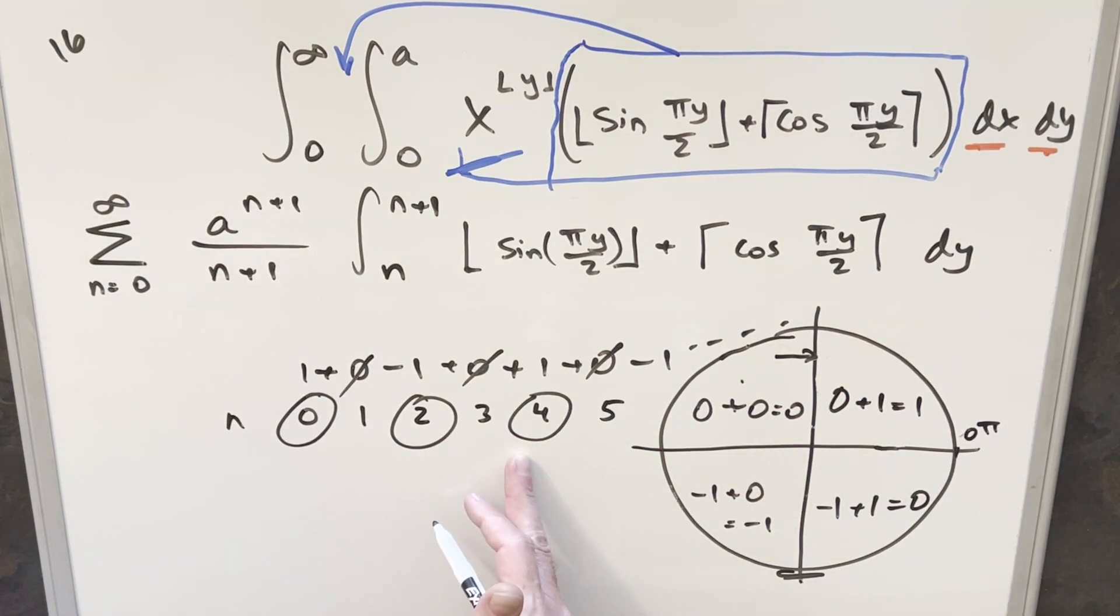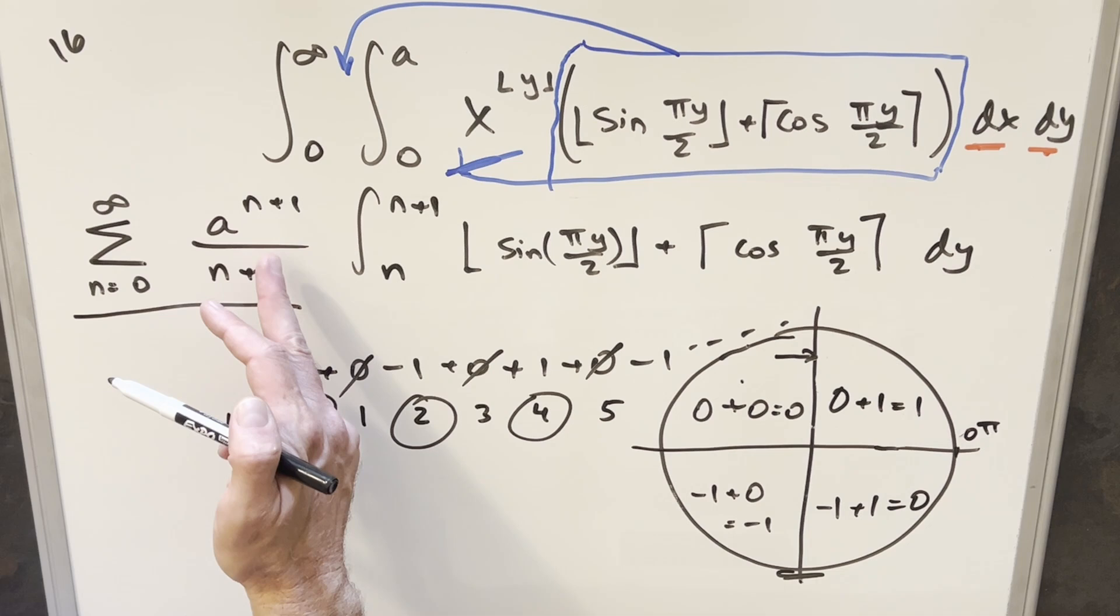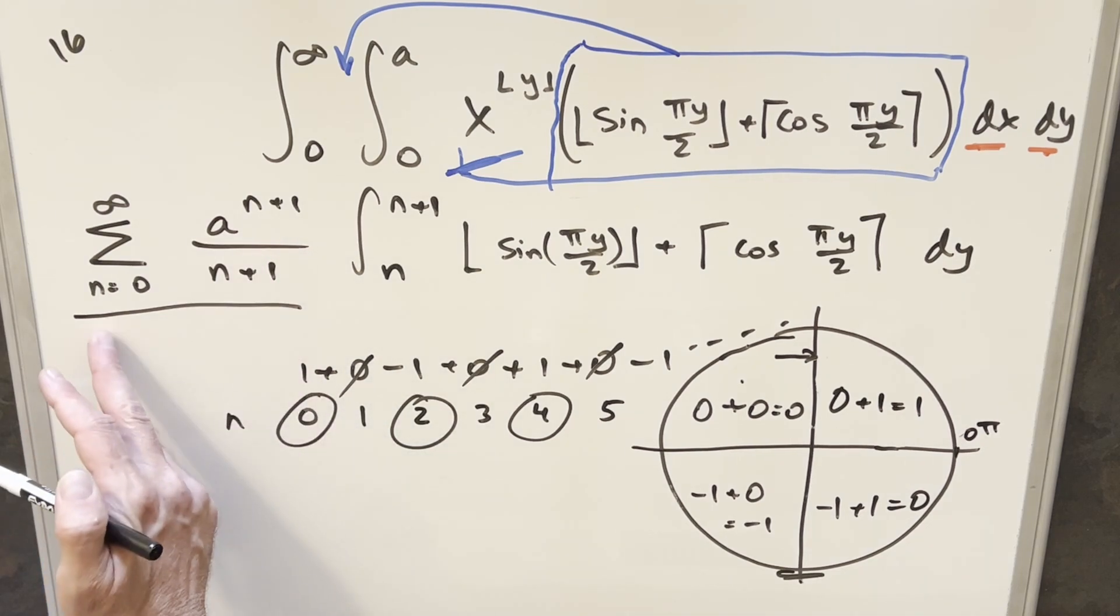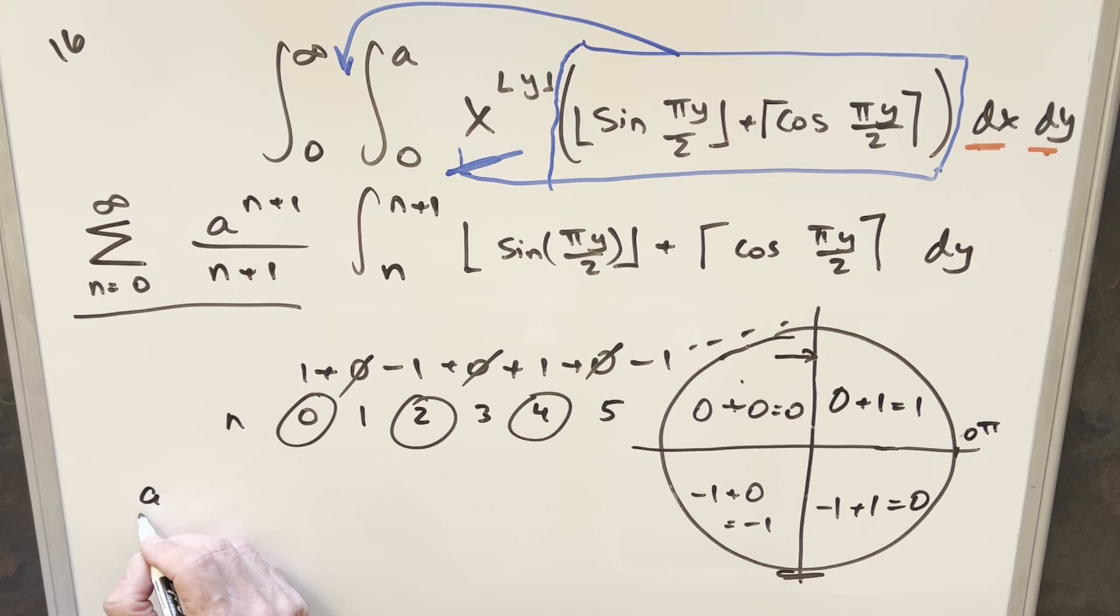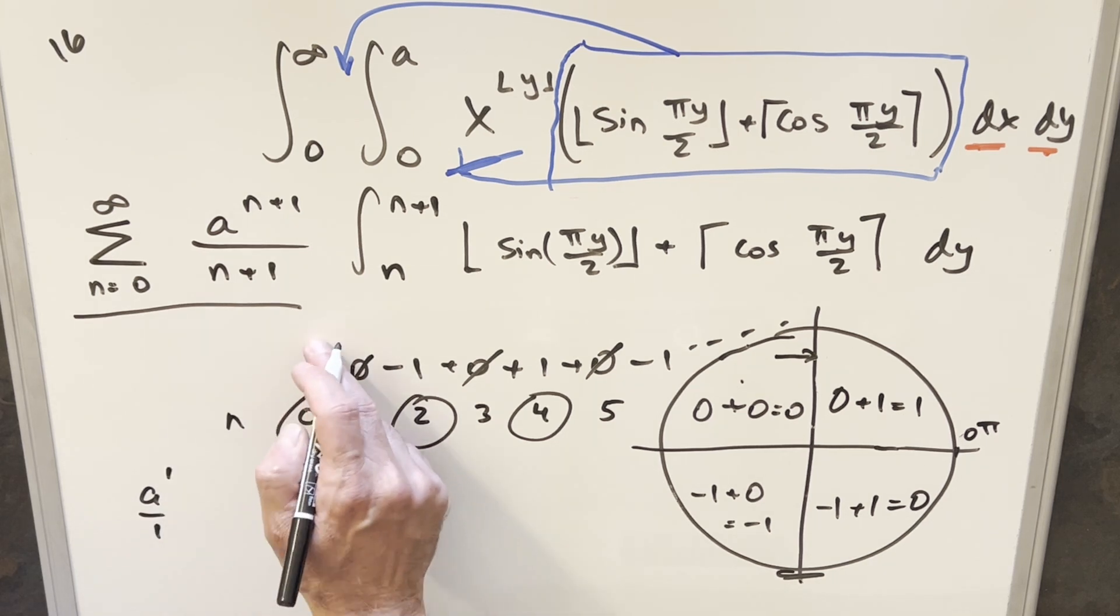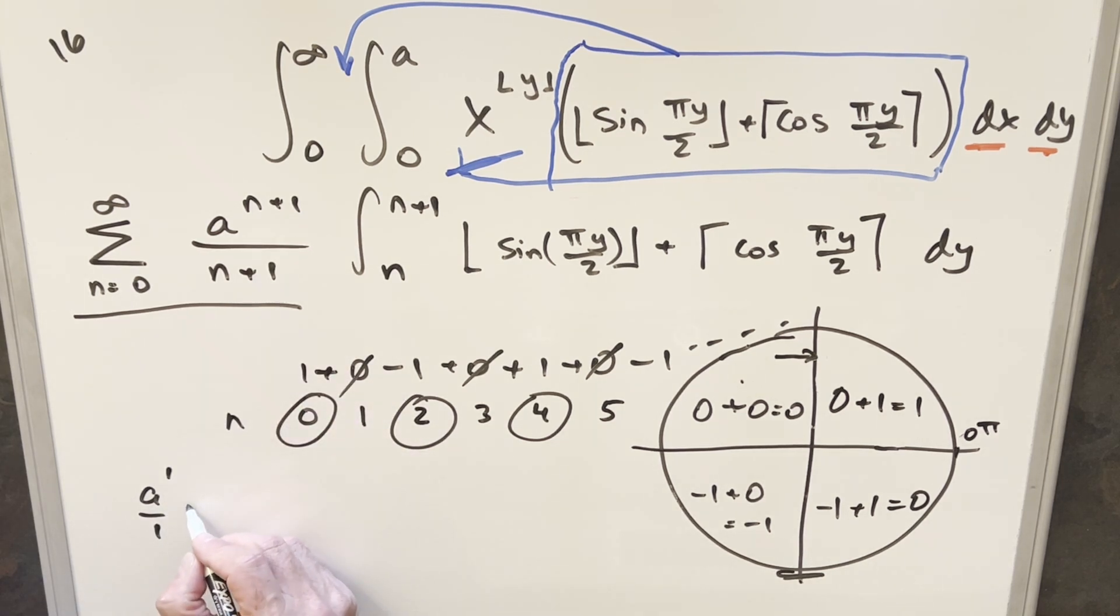So what I can do is use this information and start plugging in values right here to this beginning part with our a to the n plus one. So starting when n equals zero, we're going to have here a to the one over one and then it's being multiplied by a one. So this is just really going to be an a. Then for the next one, for when n is one, it gets wiped out by the zero. When n is two, we have a minus sign on this. So we'll have a minus in front, a to the three over three. Then we go to the next one. Now we have a plus one.